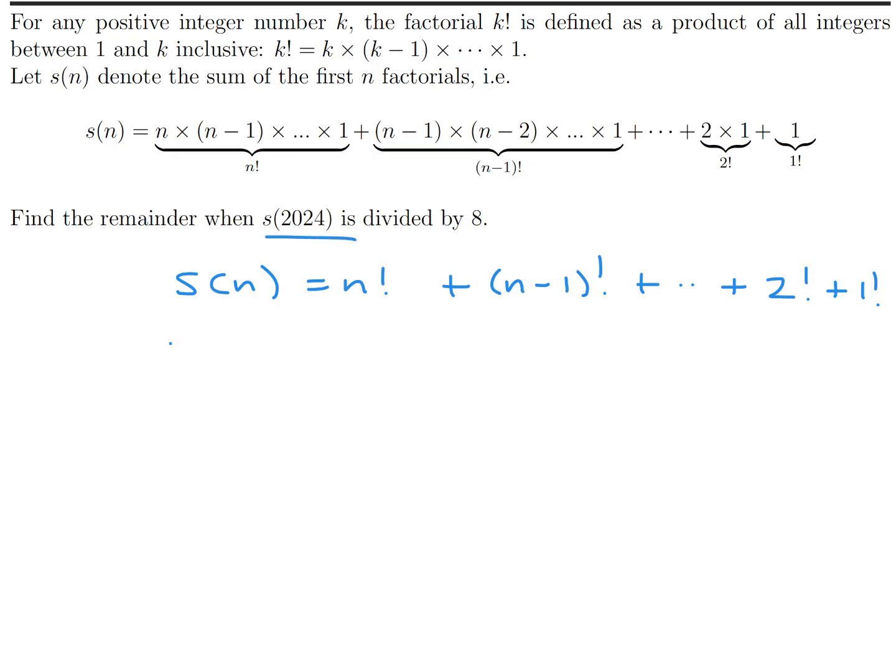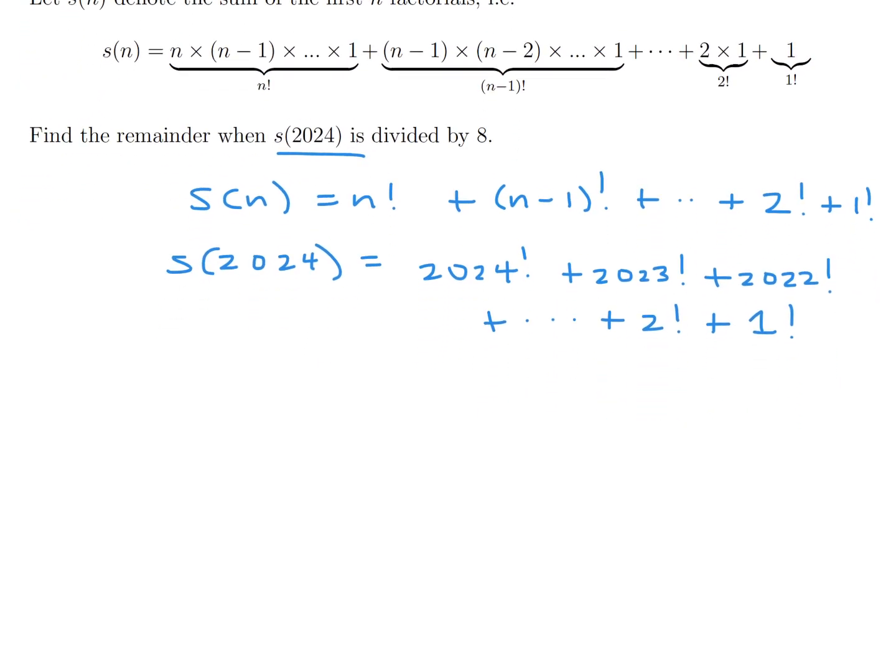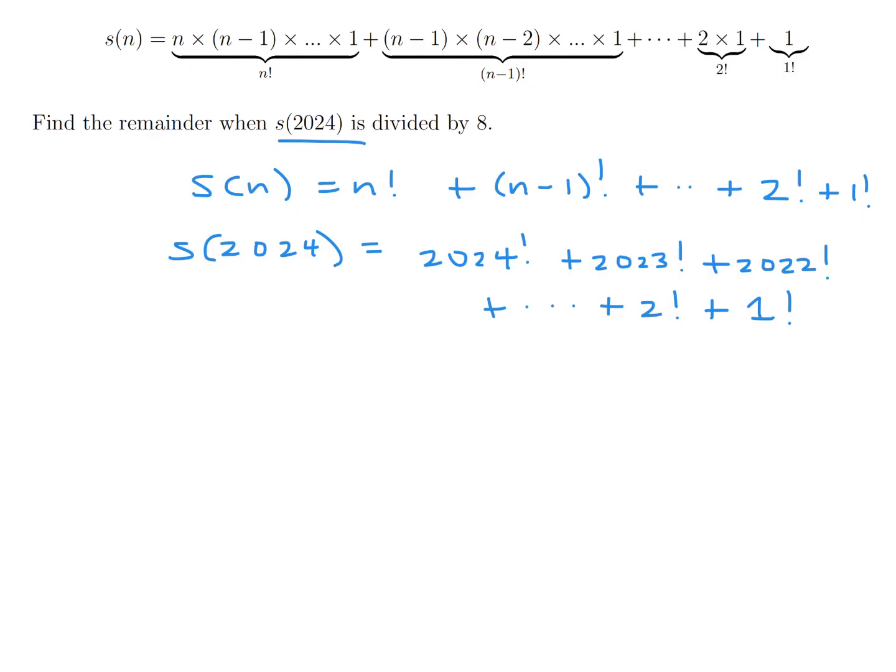And then they give us s(2024), so that would basically just be 2024 factorial plus 2023 factorial plus 2022 factorial and so on all the way down to 2 factorial plus 1 factorial. So when you have this number and you divide it by 8, what is the remainder?